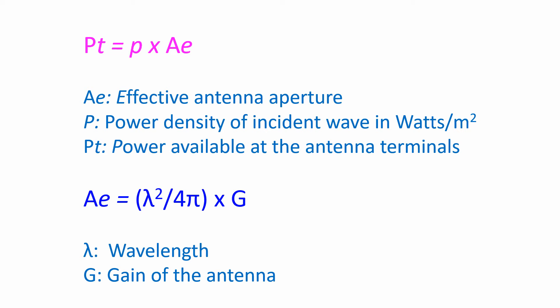This means that if p is the power density of the incident wave in watts per square meter and pt the power available at the antenna terminals to the receiver, then pt is equal to p into AE where AE is the effective antenna aperture.